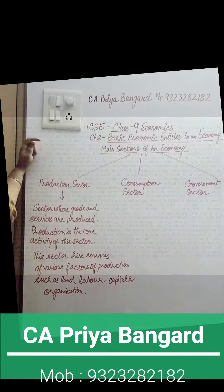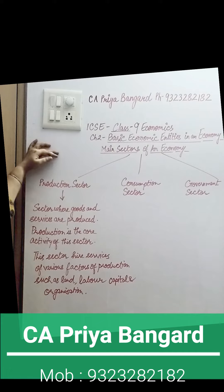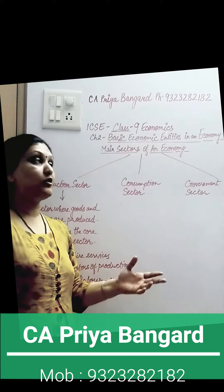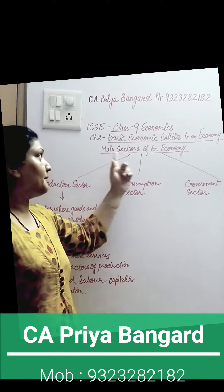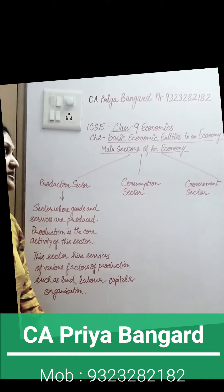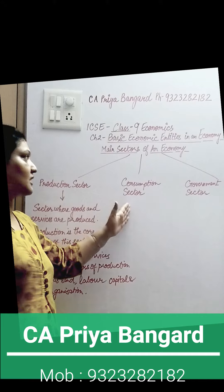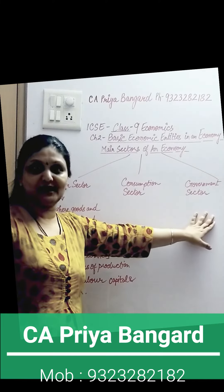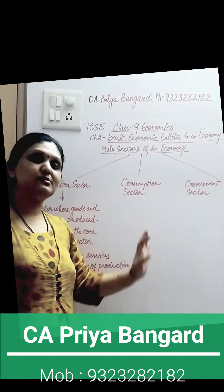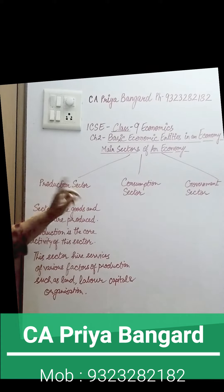ICC Clans 9th Economics Chapter 2: Basic Economic Entities in an Economy. We are learning about what are the main sectors of an economy. What are the three main sectors? Production sector, consumption sector, government sector. In this video, we will be learning about the production sector.